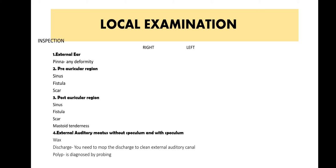Examine the external auditory canal first without the speculum, then with the speculum. Without the speculum, you can detect any narrowing or stricture of the canal due to soft tissue, which a speculum would push apart and thus miss. Then with the speculum, you get a better view of the tympanic membrane. In adults, pull the pinna upwards and backwards; in children, pull the pinna backwards to straighten the external auditory canal.